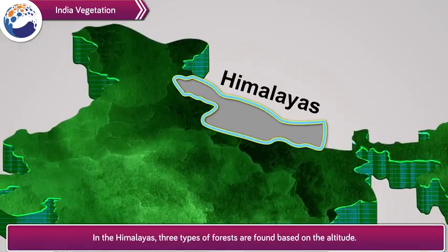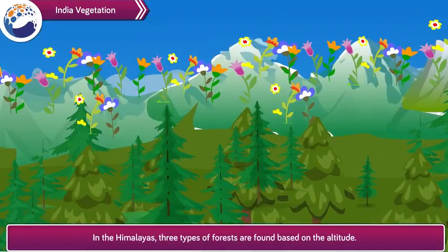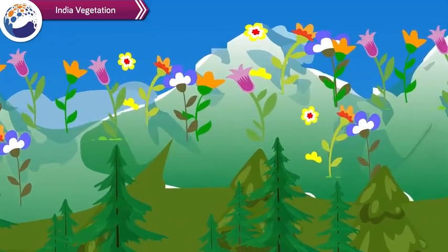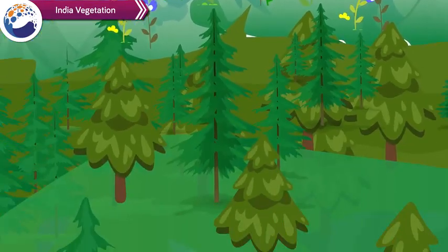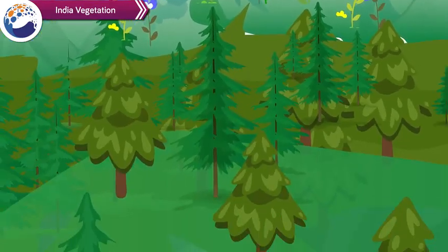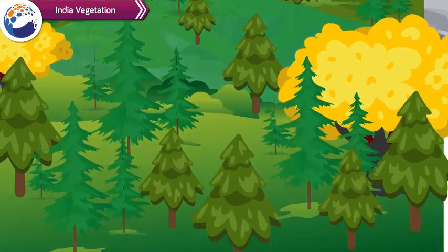In the Himalayas, three types of forests are found based on altitude. At the highest altitude, seasonally flowering trees are found. At average altitude, coniferous trees like pine, deodar and fir are found. At the foothills, mixed forests of both coniferous and deciduous type are found, where the proportion of sal trees is higher.